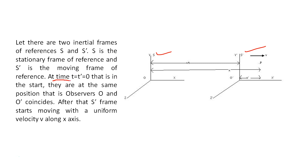Suppose that time t equals to t dash equals to 0, that is in the start. They are at the same position, that is observers O and O dash coincides.